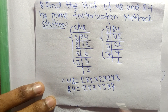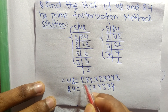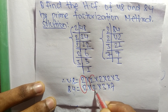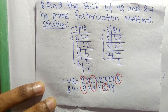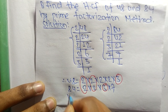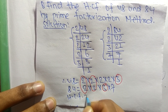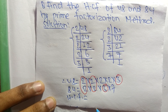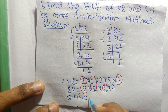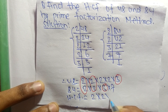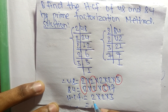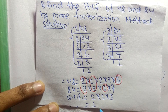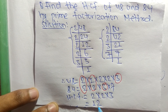Now we select the common factors from these prime factorizations. The common factors are 2, 2, and 3. So the HCF is equal to the product of these common factors: 2 × 2 = 4, and 4 × 3 = 12. Therefore, 12 is the HCF of 48 and 84.